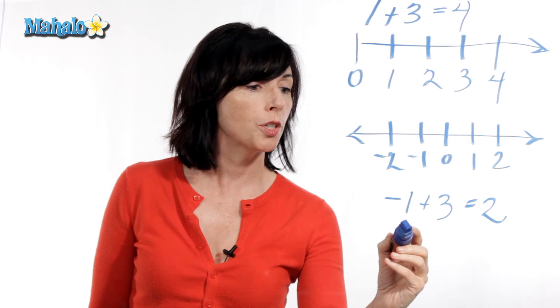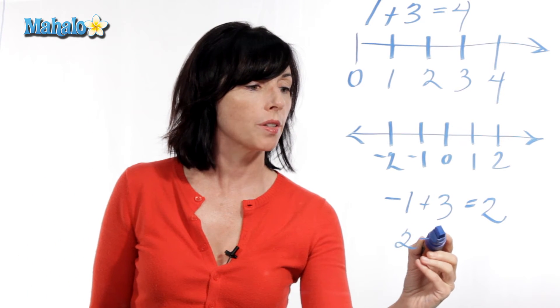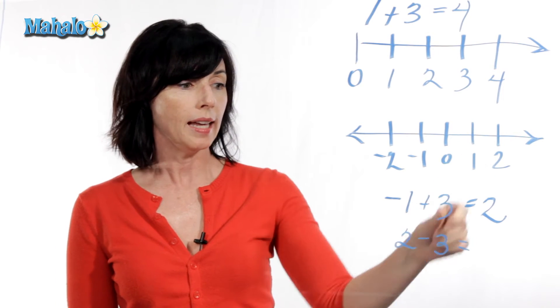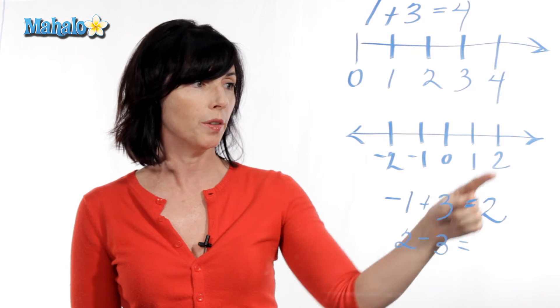So let's say we have two minus three. So we'll start at two, and since we're subtracting, we'll move this direction, three units.